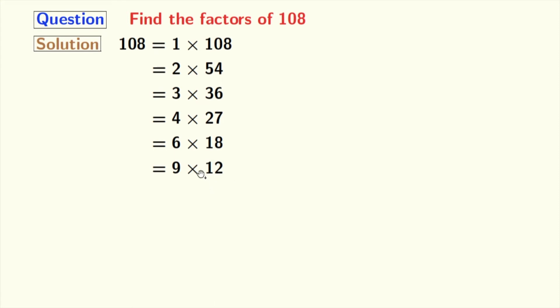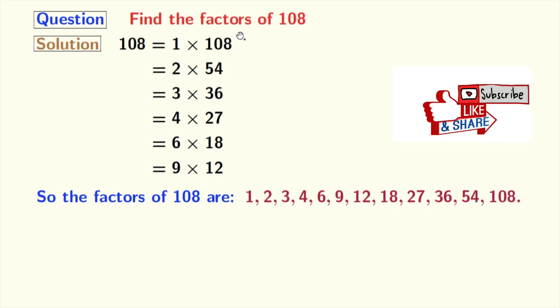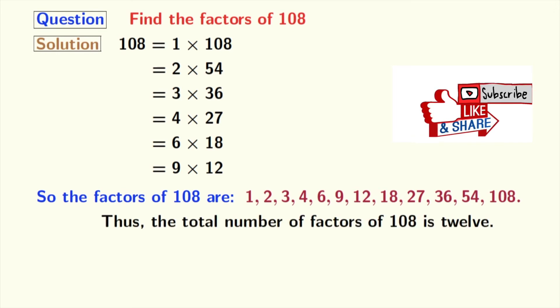So, we will stop right now. Thus, we have all the factors of 108 which are 1, 2, 3, 4, 6, 9, 12, 18, 27, 36, 54 and 108. So, the total number of factors of 108 is 12.